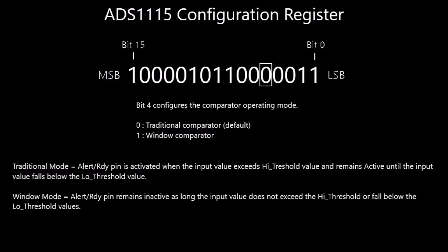Bits 4 through 0 work in conjunction with the high and low thresholds. Bit 4 sets the comparator's mode. In traditional mode, if the converted data value exceeds the high threshold value, the alert ready pin will enter the active state and remain there until the conversion value falls below the low threshold value. In window mode, the alert ready pin will remain inactive if the converted data does not exceed the high or fall below the low thresholds.